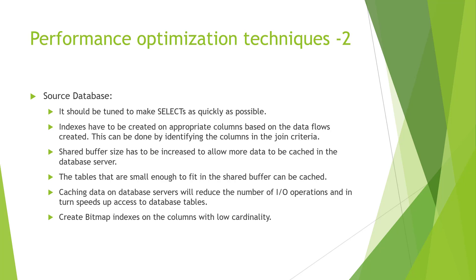When we talk about cardinality, we can take an example of gender. In gender we have two values — male and female. So when we have few distinct values for one particular column, that is called low cardinality.